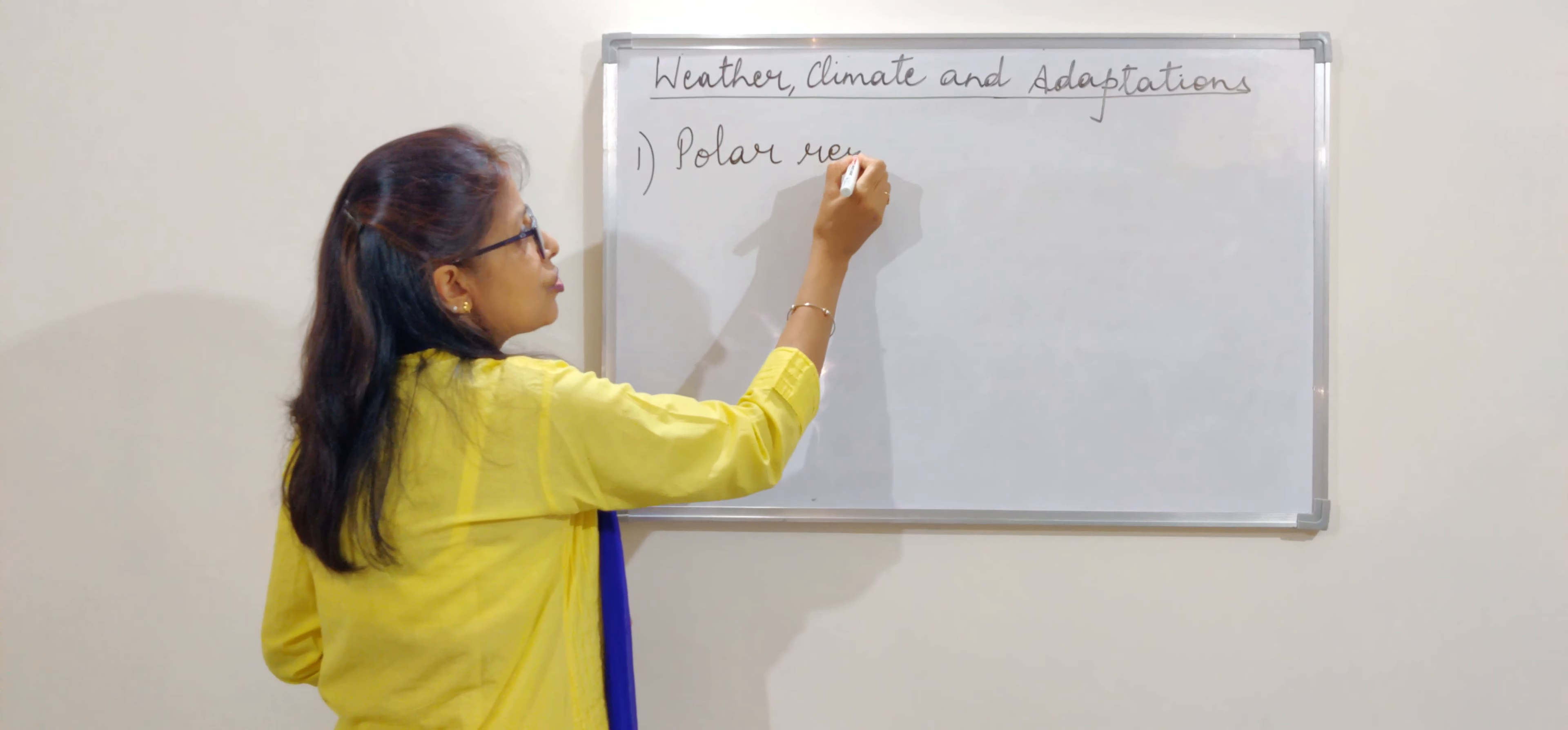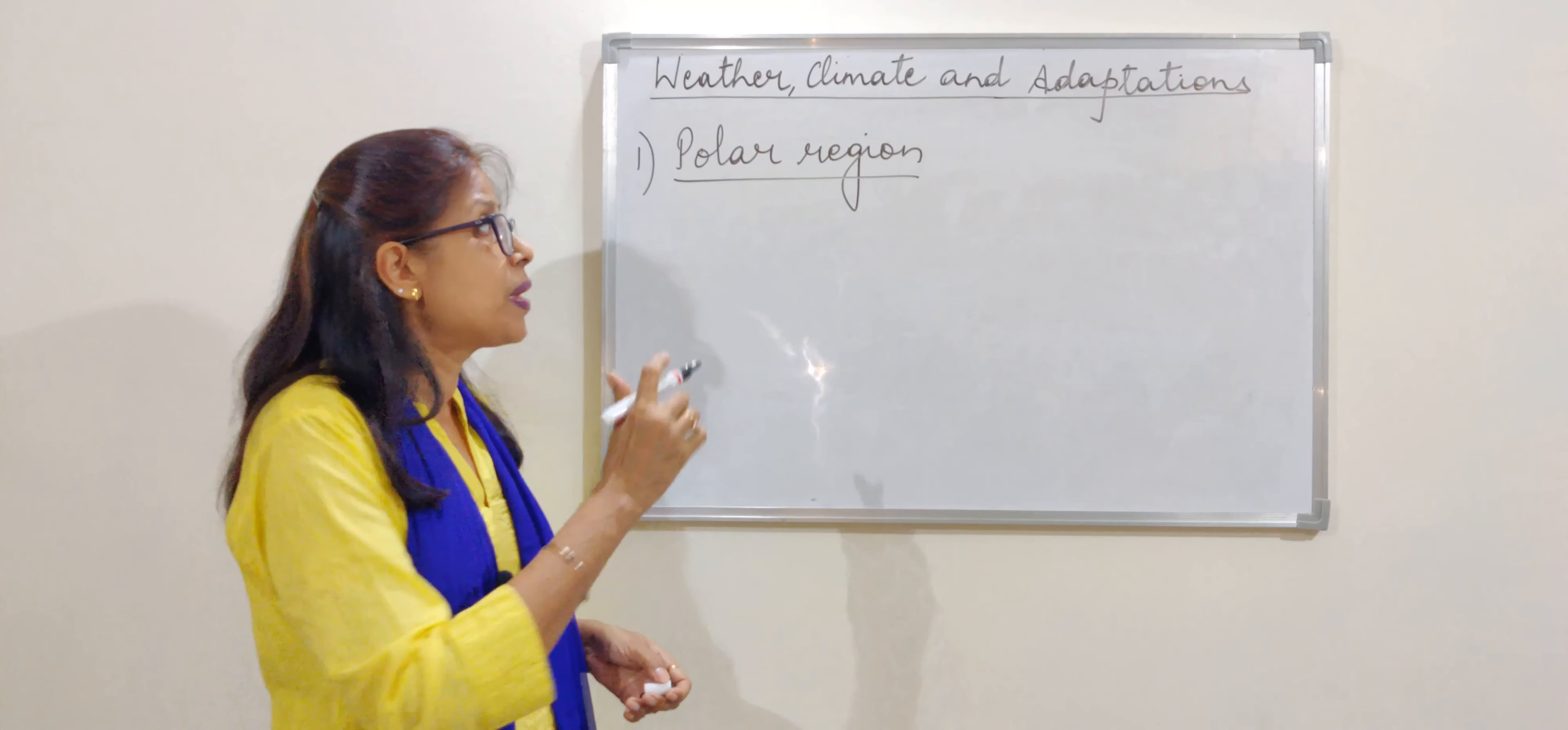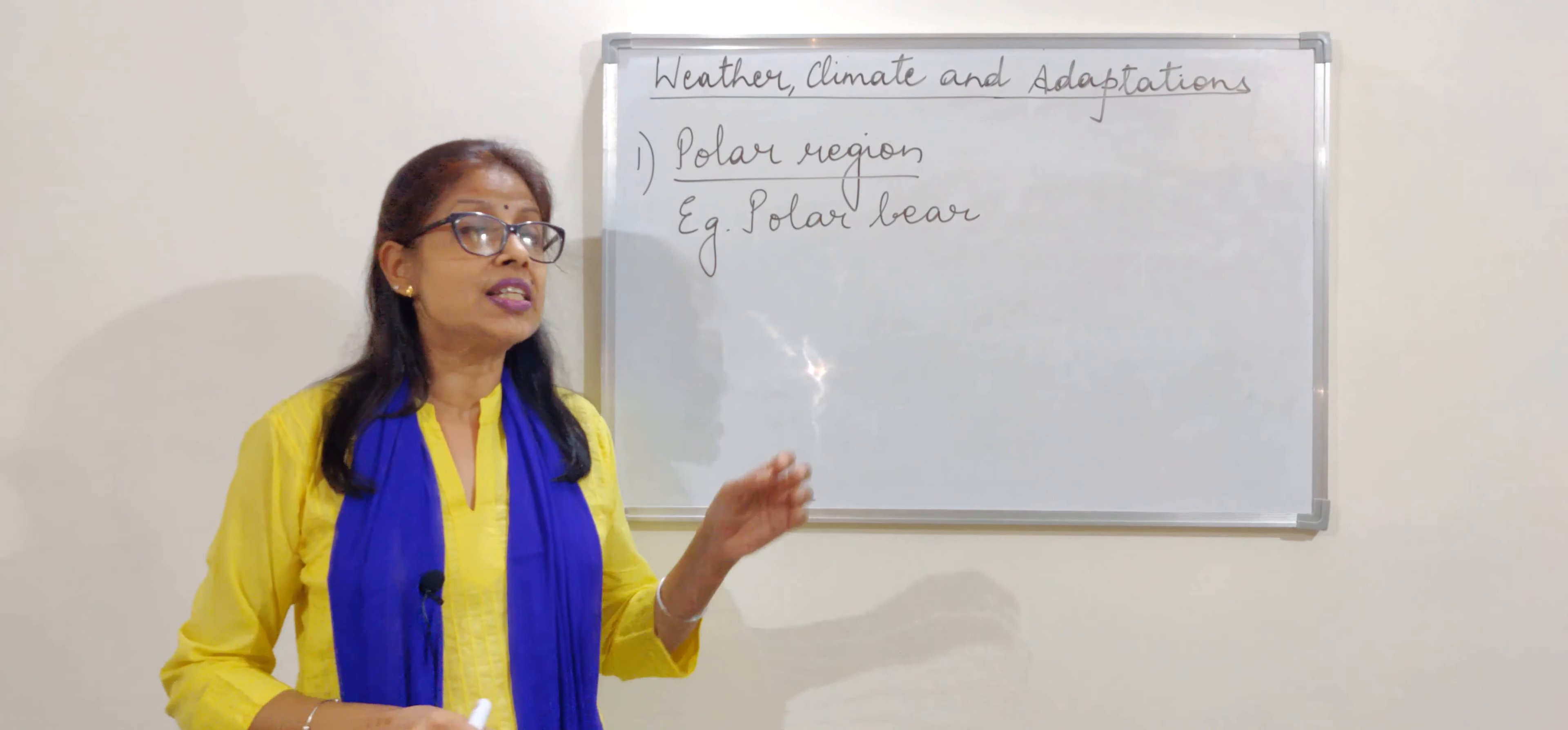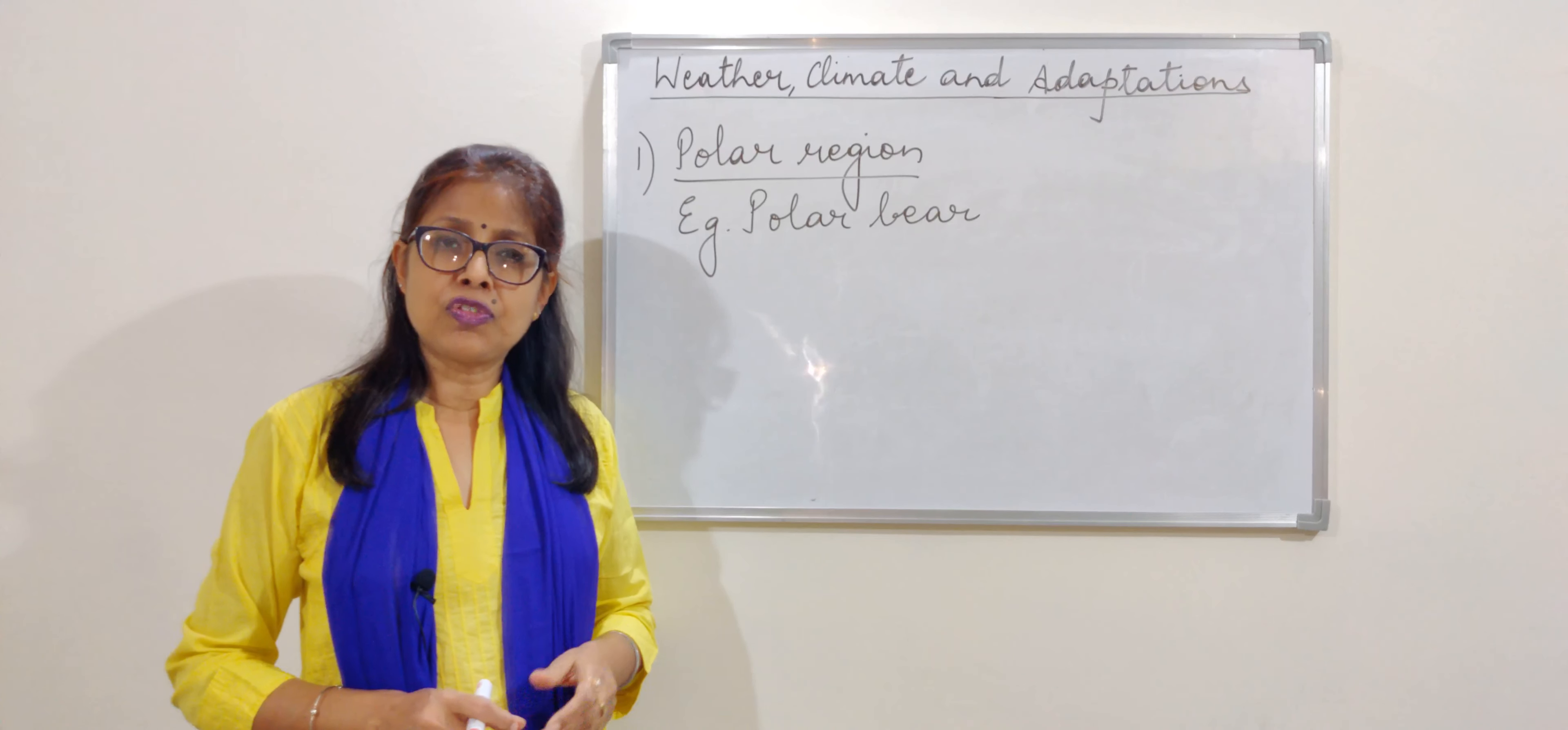Polar region is that region where in one year most of the time there is heavy snowfall or it is covered with snow, and the best example here is that of polar bear. Now what happens to the animals living in polar region? They do not get the place to stay or cover themselves, or they do not get proper food when there is snowfall.